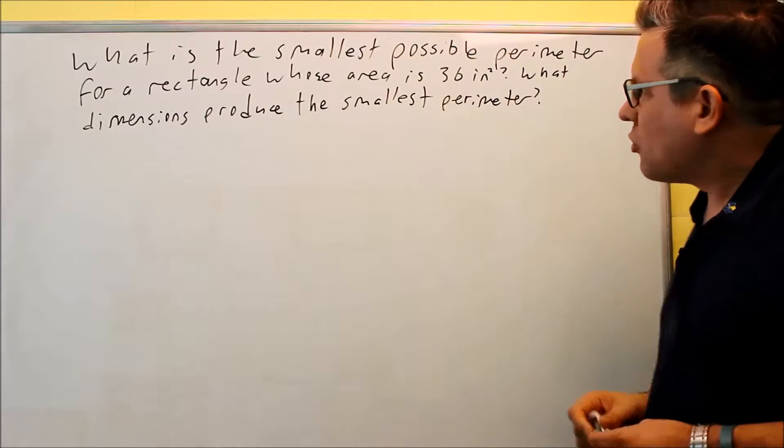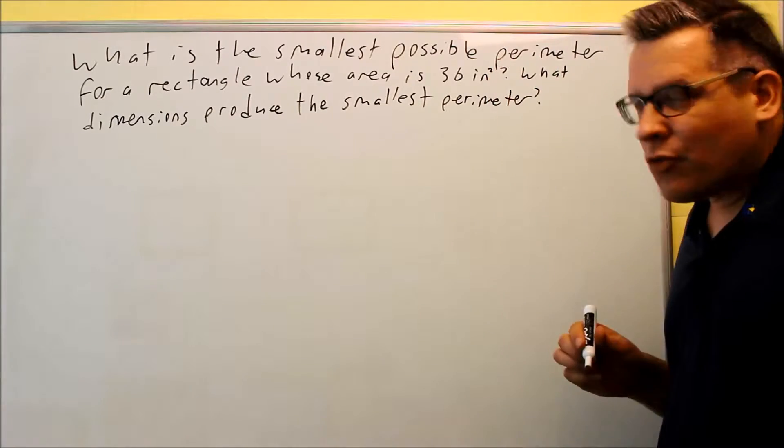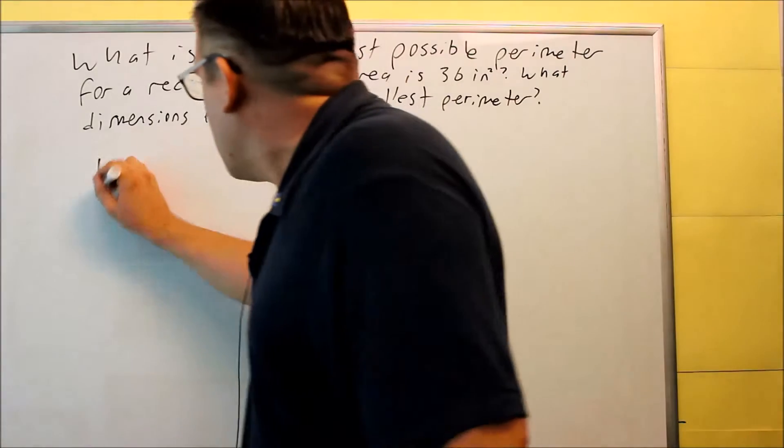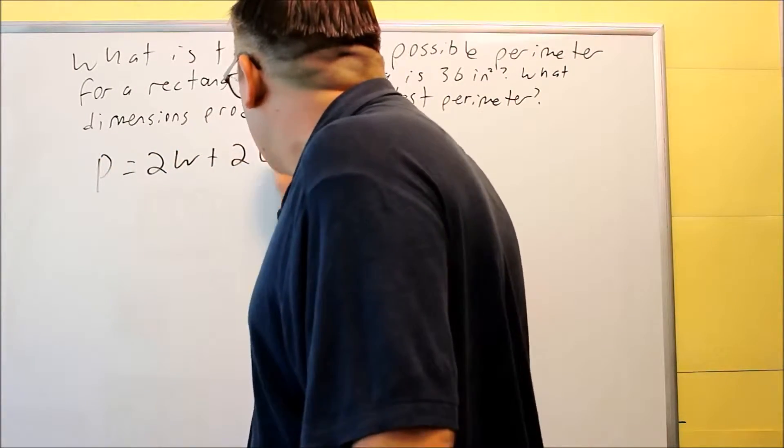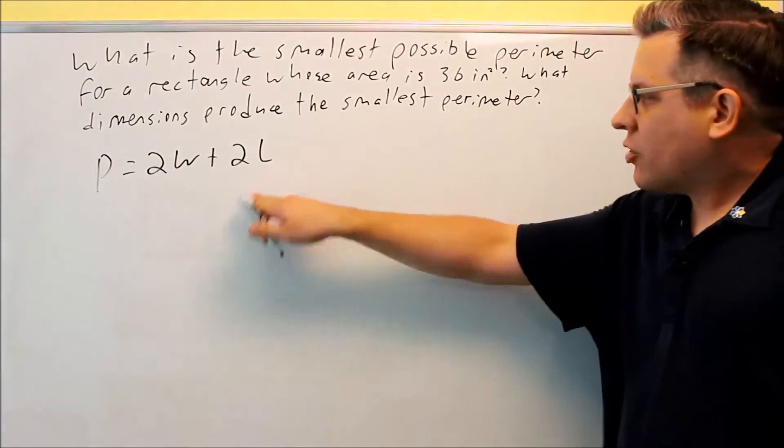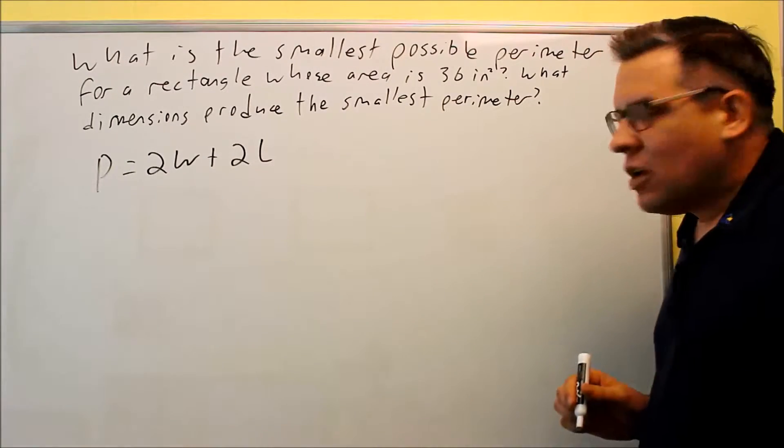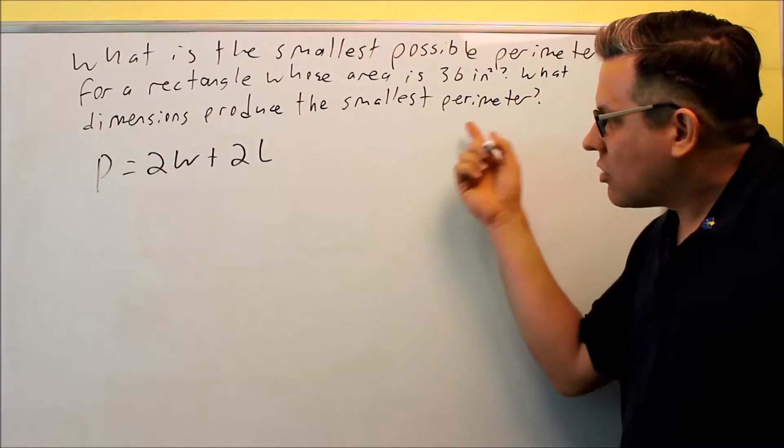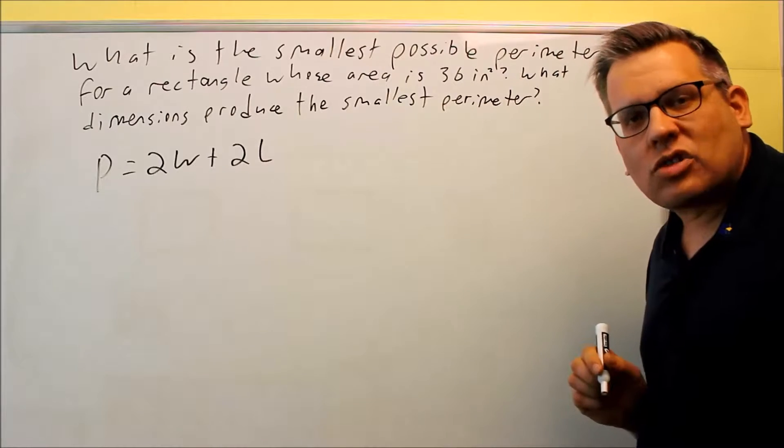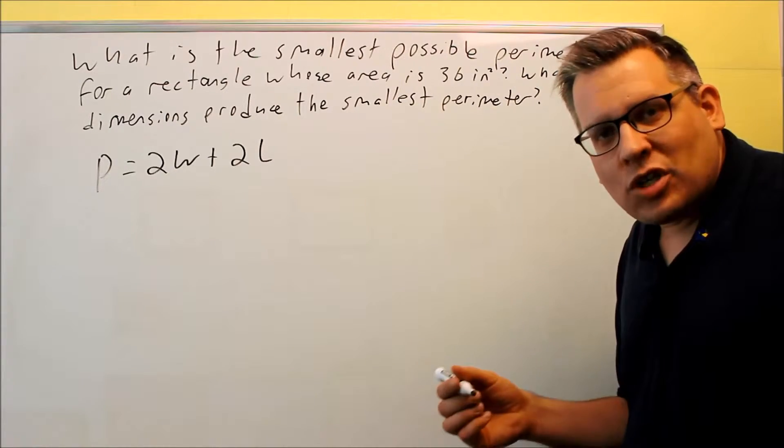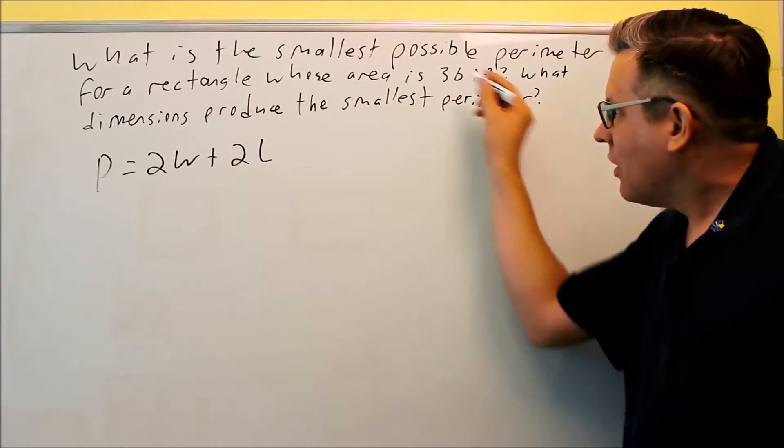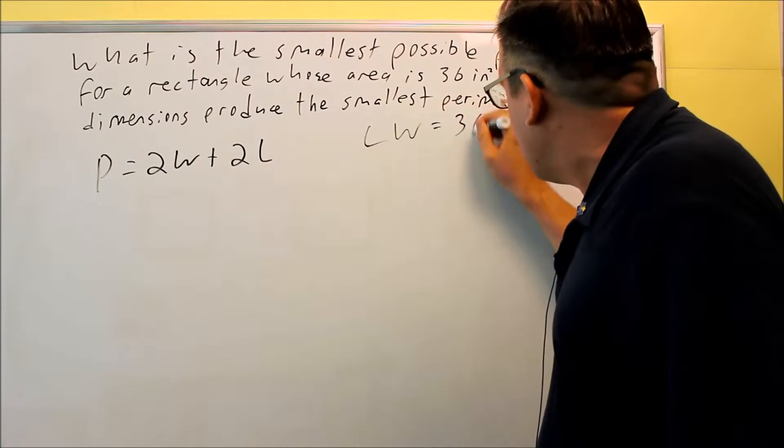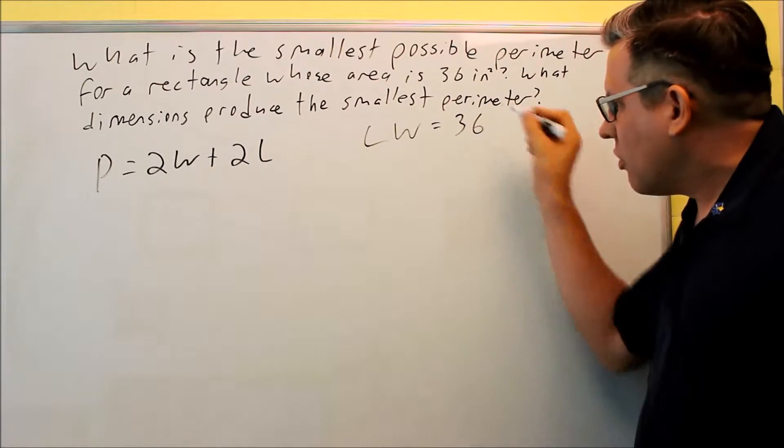It says, what's the smallest possible perimeter? So perimeter for a rectangle, we need to know the formula for that one. The one you want to use is P = 2W + 2L, two times the length, two times the width. That's going to be your perimeter. Now let's keep reading. It says whose area is 36 square inches. So if we have length and width as the two sides of our rectangle, we know that when we multiply them together, area equals length times width, that should be equal to 36. So that means we have another equation, L × W = 36.